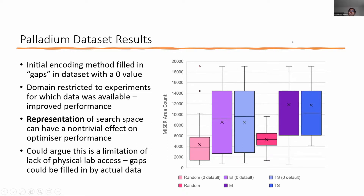This was a recurring challenge throughout the project: without access to a physical lab, we were limited to existing datasets from papers. When the model suggested a combination of conditions that might give excellent yield but hadn't been tested, we couldn't actually go and verify that in a lab — which would have been very useful.